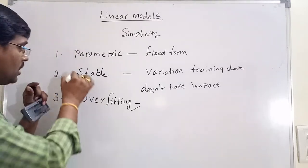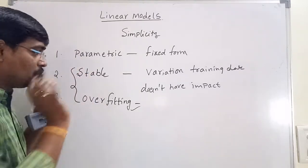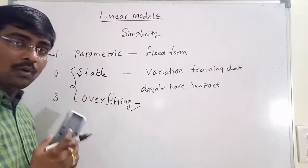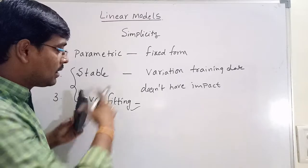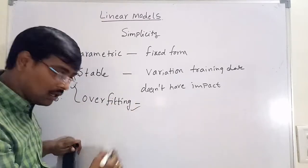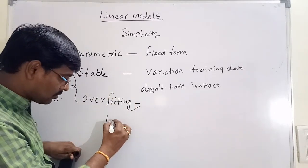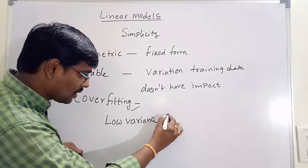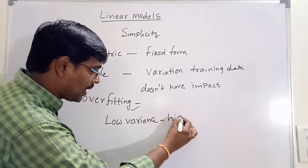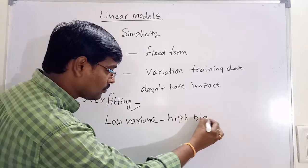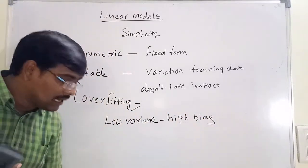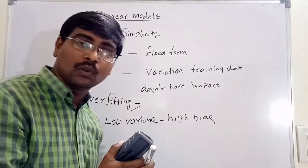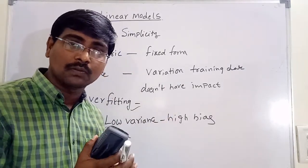If we combine these three features — parametric, stable, and less susceptible to overfitting — the linear models are low variance, high bias models. Based on this, the linear models are low variance and high bias models.